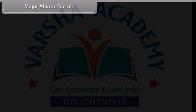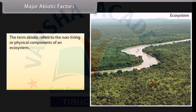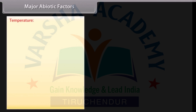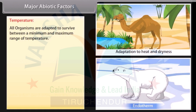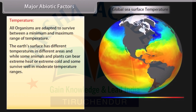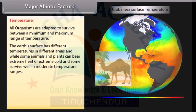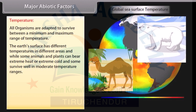The term abiotic refers to the non-living or physical components of an ecosystem. These are temperature, water, light, and soil. All organisms are adapted to survive between a minimum and maximum range of temperature. The earth's surface has different temperatures in different areas, while some animals and plants can bear extreme heat or extreme cold, and some survive well in moderate temperature ranges.